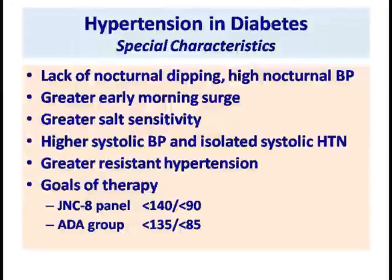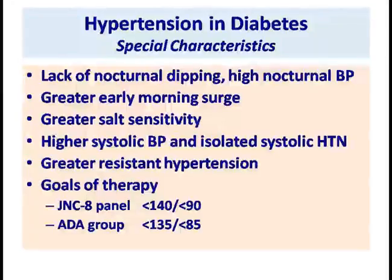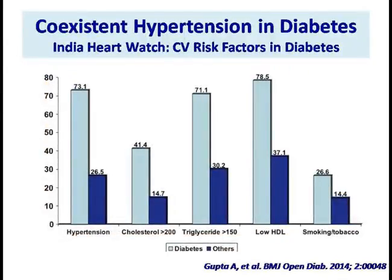There are special characteristics of hypertension in diabetes. In patients with hypertension and diabetes, there is lack of nocturnal dipping and high nocturnal blood pressure, which you can identify on ambulatory blood pressure monitoring. There is a greater early morning blood pressure surge, greater salt sensitivity — that's why diuretics are useful — higher systolic blood pressure, higher incidence of isolated systolic hypertension, greater resistant hypertension, and the goals of therapy are different, although the latest guidelines say 140/90 in both diabetics and non-diabetics.